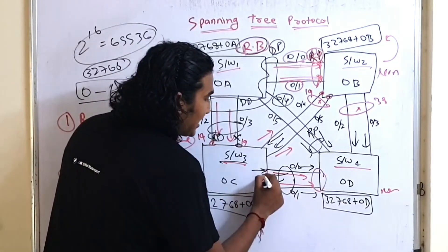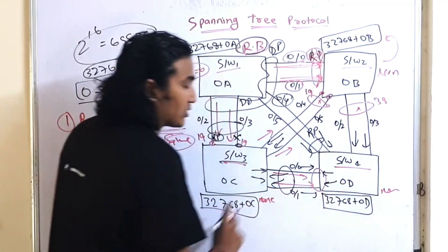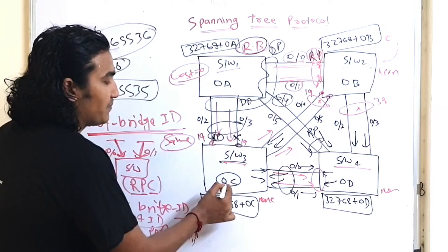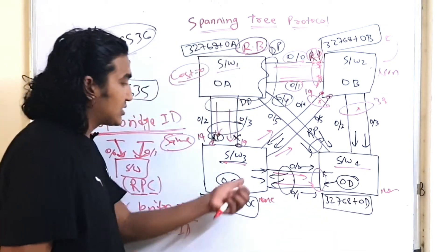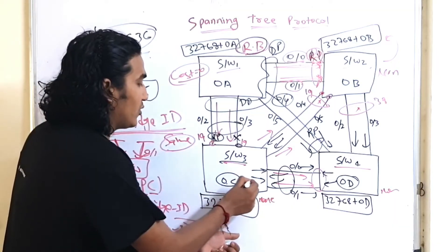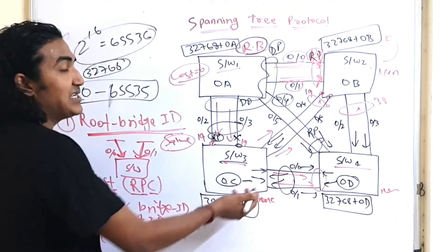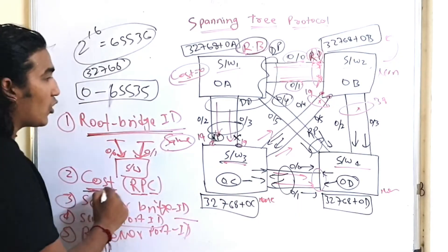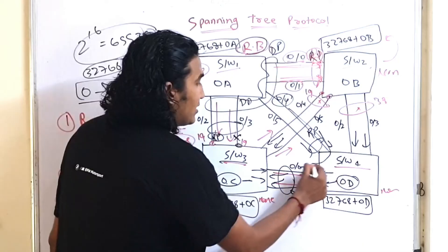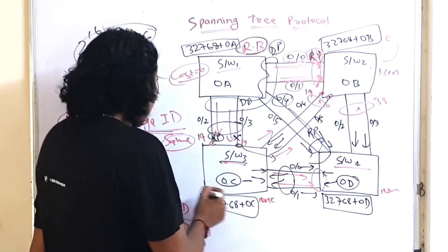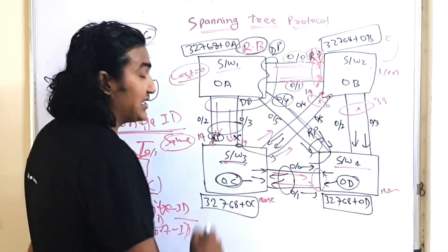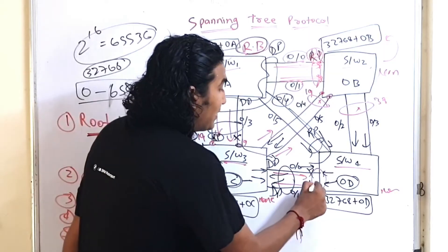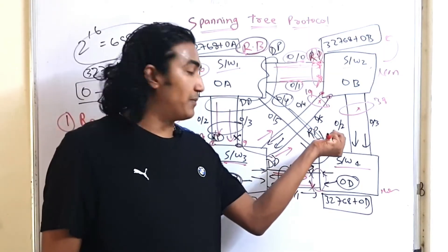On the link between Switch 3 and Switch 4, both switches send BPDUs. The switch sending the superior BPDU becomes the DP on that segment. Since Switch 3 has a lower MAC address (0C vs 0D) and therefore a lower bridge ID, Switch 3 is sending the superior BPDU. So Switch 3's port becomes DP and Switch 4's port becomes alternate.